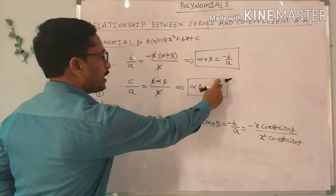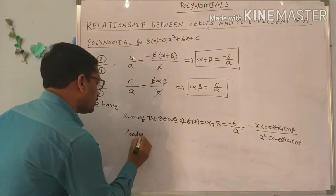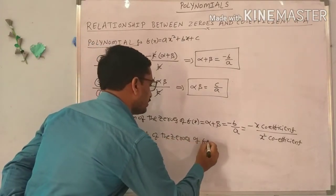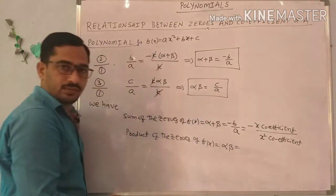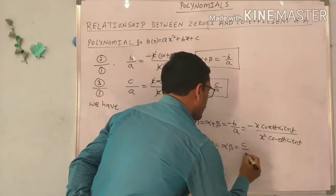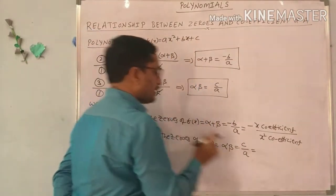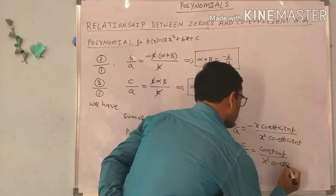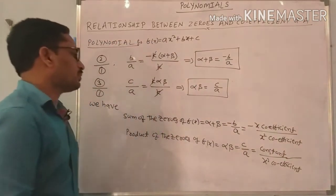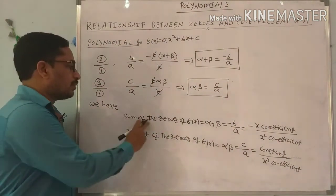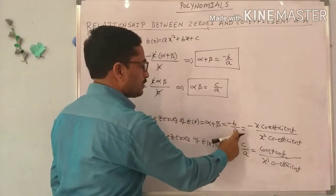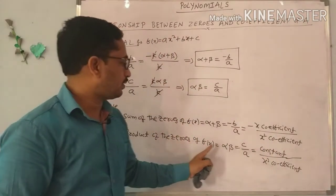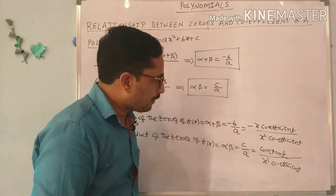The second relation: alpha into beta equals C by A. Alpha into beta means the product of the zeros. The product of the zeros of F of X equals alpha into beta equals C by A, where C means the constant term and A means the X squared coefficient.